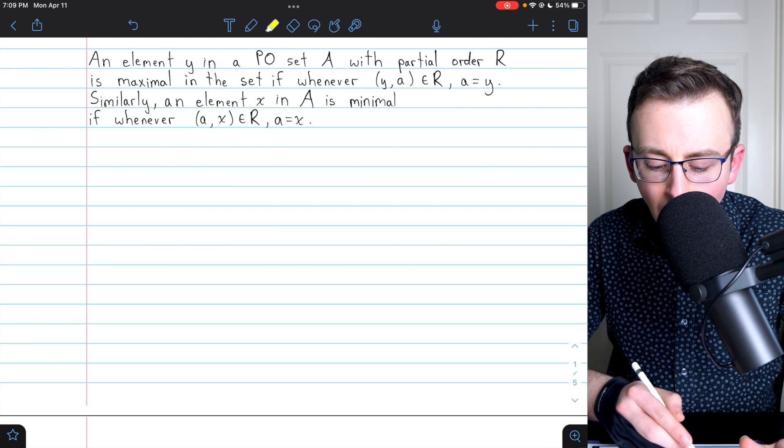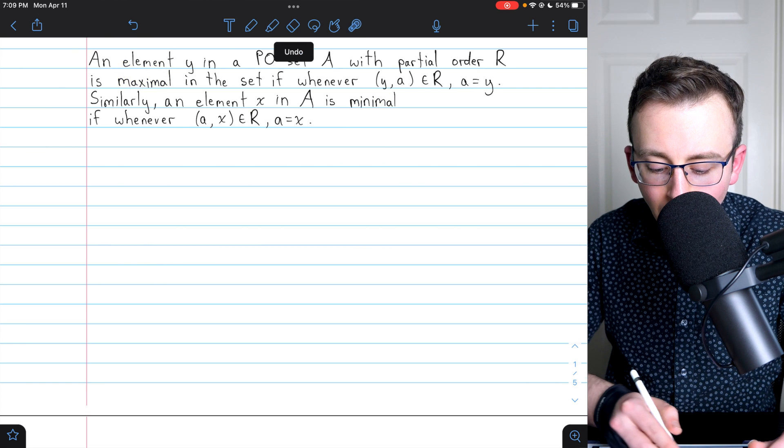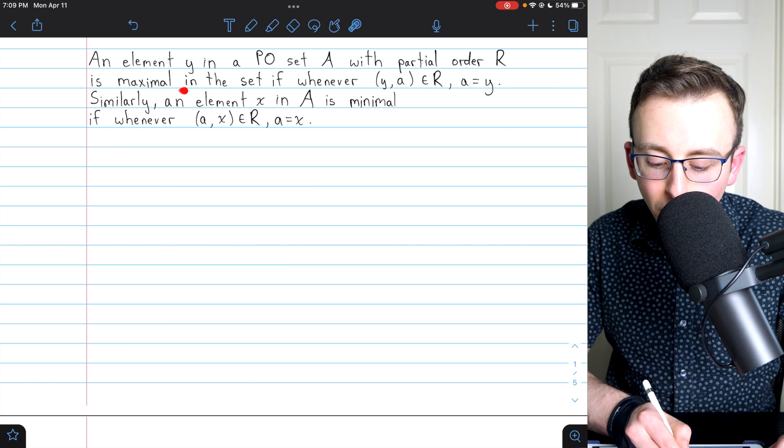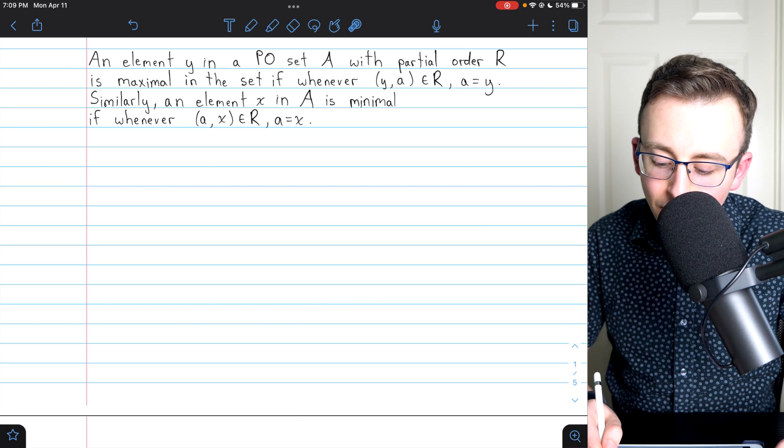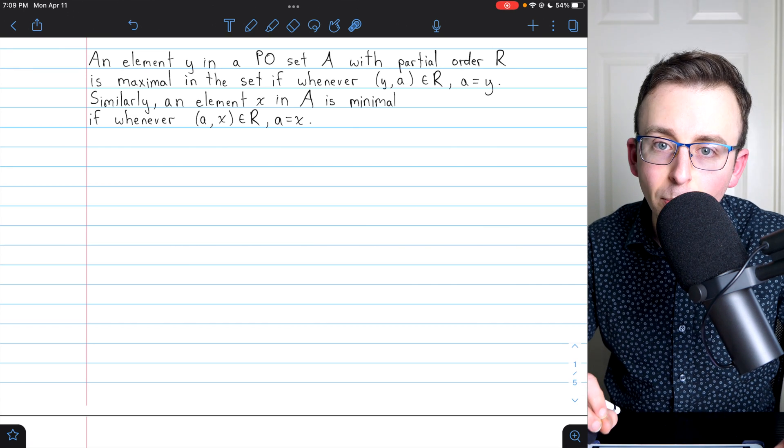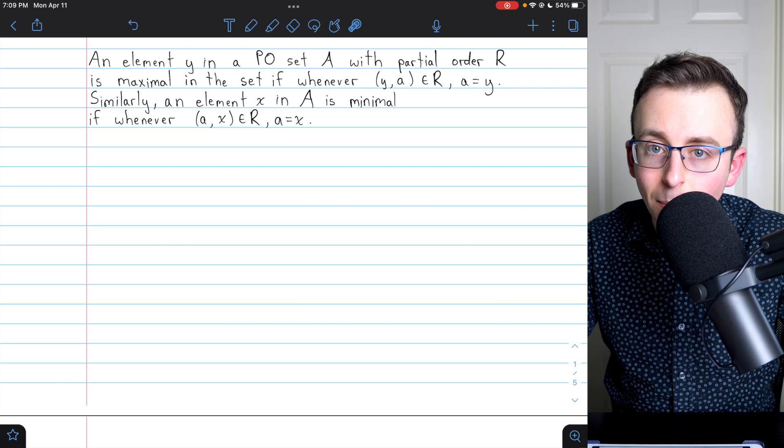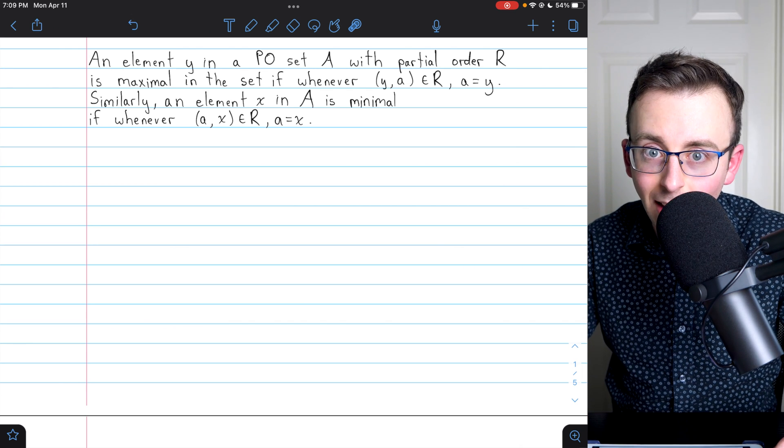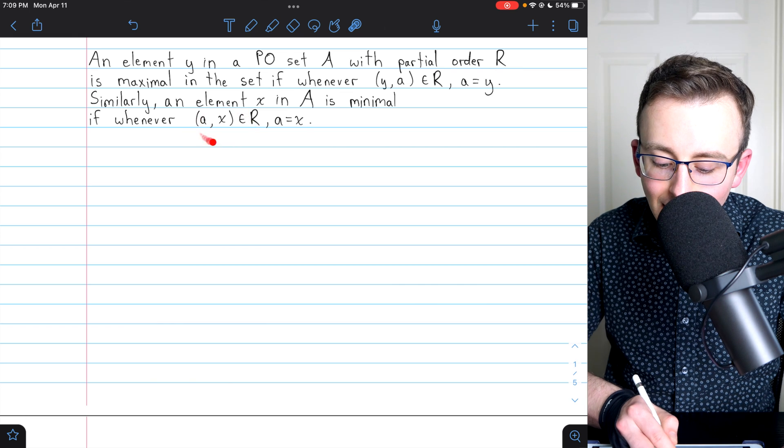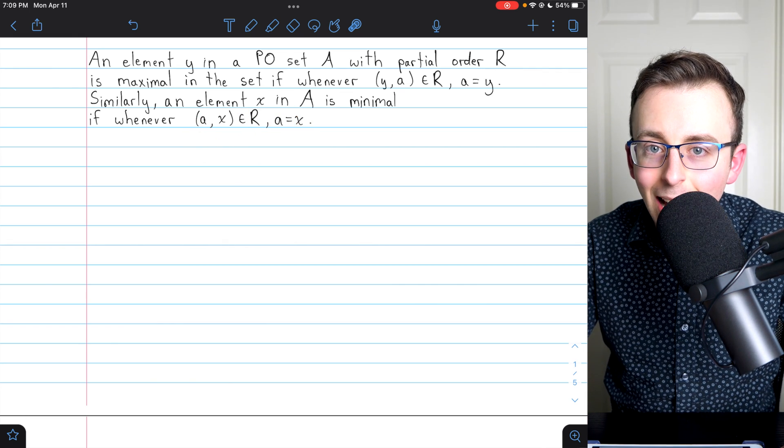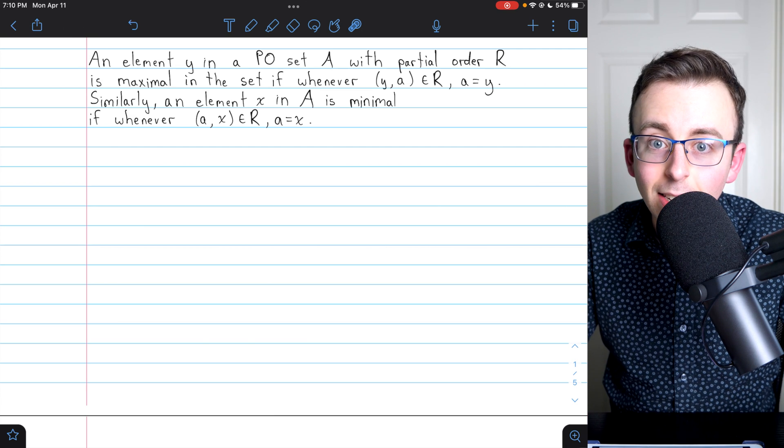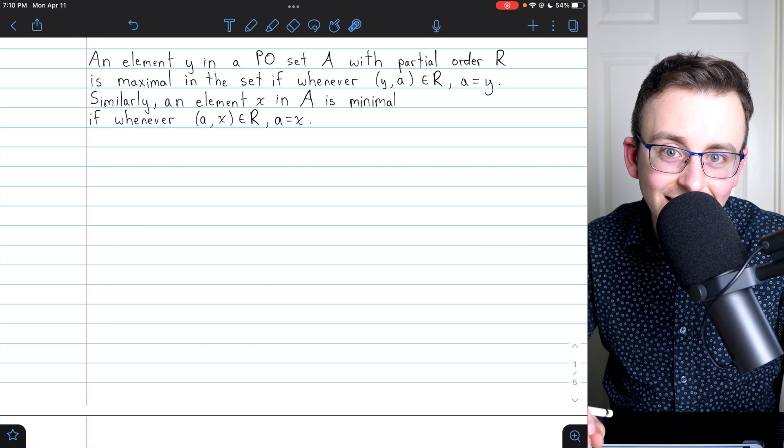Now let's quickly touch on some terminology. I want to tell you about maximal and minimal elements. An element y in a poset A with partial order R is maximal in the set if whenever y relates to a, a is equal to y. This means an element is maximal if it relates to no element except itself. Other elements might relate to it, but it can only relate to itself. Similarly, an element x in A is minimal if whenever a relates to x, a equals x. This means for an element to be minimal, no element can relate to it except itself. It can relate to other elements, but no element can relate to it except itself.